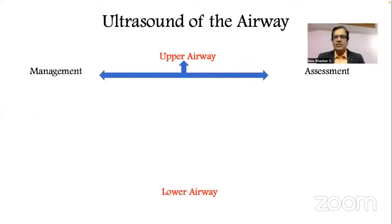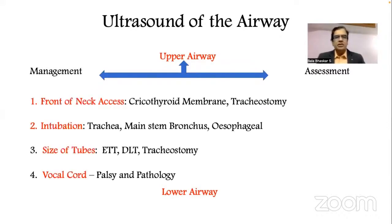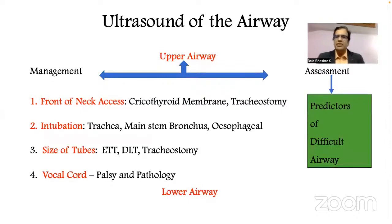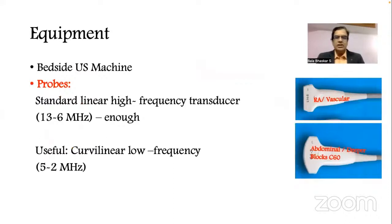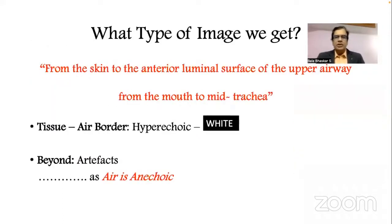For the upper airway, ultrasound can be used for management and assessment of airway conditions, and also for assessment of difficulty in airway management. In terms of actual management it covers front-of-neck access, intubation, tube sizing, and vocal cord assessment. For difficult airway prediction, evidence is accumulating. Equipment-wise, apart from the ultrasound machine, the standard linear probe is sufficient for majority of applications, but a curvilinear probe at low frequency of 2–5 MHz should also be available.